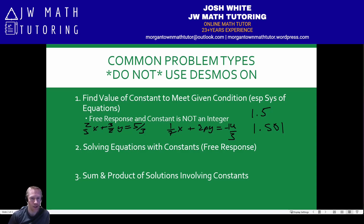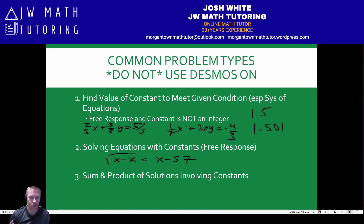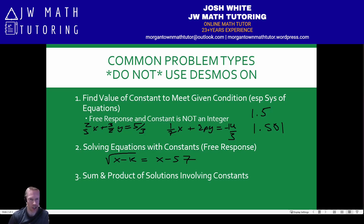The second type is solving equations that have a constant in them, specifically when it's a free response question. An example came up a couple months ago where it wanted to know the value of K if the equation had one solution. The problem is, again, you're not told it's an integer, and it turned out it was not an integer — it was a decimal. So if you tried to graph it and use Desmos to find where the two sides intersected only one time, it was very time consuming because you had to narrow it down and keep decreasing the slider range and step size. So questions like this, I generally don't recommend solving entirely with Desmos — only recommend it as a check afterwards.